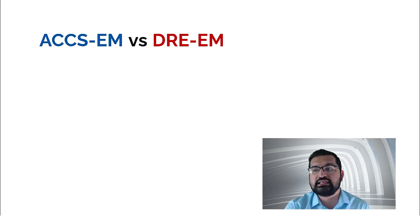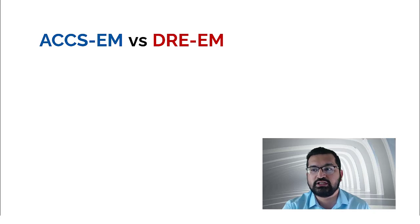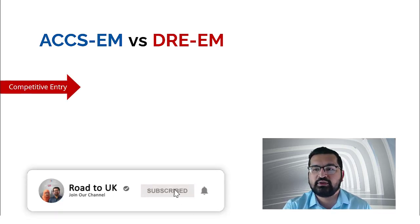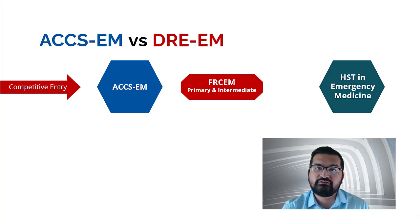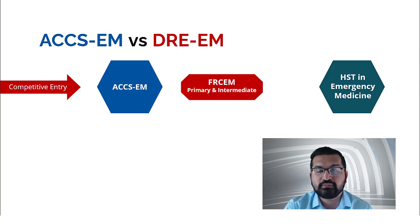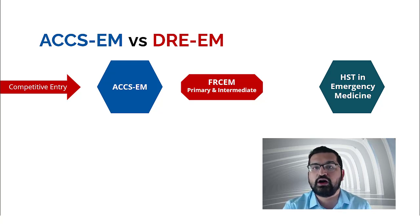Comparing ACCS-EM and DRE-EM: they are completely different pathways. If you're a fairly new graduate who has just worked towards obtaining GMC registration, DRE-EM — the Defined Route of Entry — will not be your target. Rather, your target should be ACCS-EM: you do competitive entry, join ACCS-EM, pass the two FRCEM exams, and then apply for higher specialty training in emergency medicine. DRE-EM applies to those who have more experience in emergency medicine already, or who have started in another specialty training and want to switch to emergency medicine.